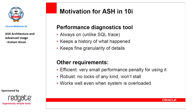ASH keeps a full history of activity on your system, which means if a problem happens in the middle of the night you can always go back and look at this data — unlike other diagnostic techniques such as SQL trace where you'd have to reproduce the problem. It doesn't need you to reproduce the problem because you get data about it the first time it happens. That's the benefit of it being always on. The granularity of the data is very detailed — it captures many different dimensions about every session that is active in the database.